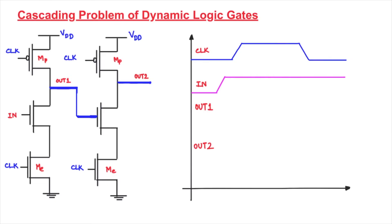To understand the cascading problem, let us first consider two cascaded n-type dynamic inverters. This is one n-type inverter, because in the dynamic CMOS design we do not implement any pull-up logic — only the pull-down logic is implemented — and we have two extra transistors: one pre-charge transistor and one evaluation transistor. One dynamic inverter has been connected directly to the second inverter, and we are going to draw the corresponding waveform graph for both.